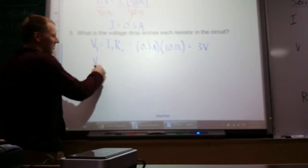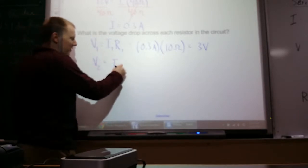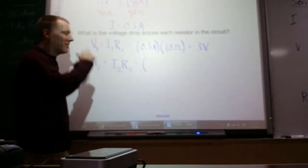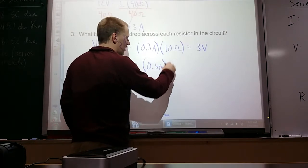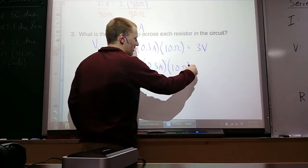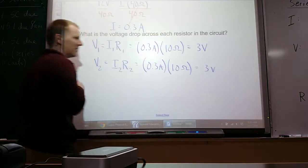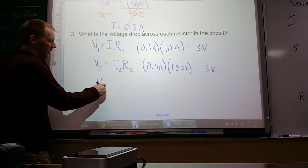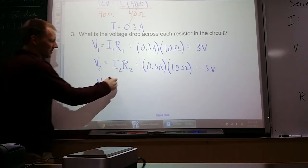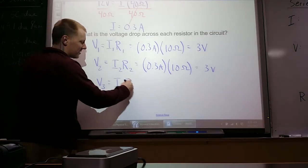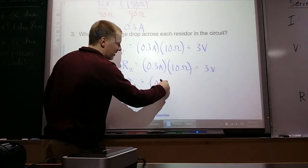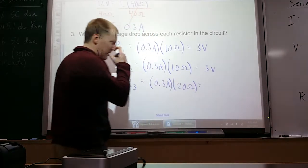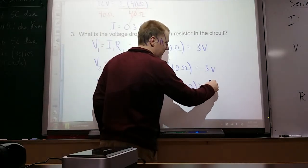Second resistor, V2, it would be the current going through resistor 2 times its resistance. But again, same current everywhere, 0.3 amps times 10 ohms, where its resistance gives us another 3 volts. V3 is current through 3 times its resistance, 0.3 amps, this time times 20 ohms, which gives us 6 volts.